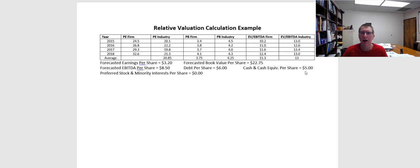We've also got some data here about our forecasted earnings per share, book value, EBITDA, and other things we're going to use for those calculations. One of the things we need to do to get started is figure out what the average has been over the time period we're looking at. Typically, about three to six years is an appropriate time frame. If you go back too far, you'll have less meaningful data; if you don't have enough data, it's also not very meaningful. So here I've grabbed four years to get an average of what our multiples should be.